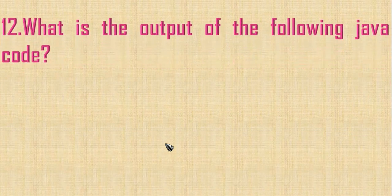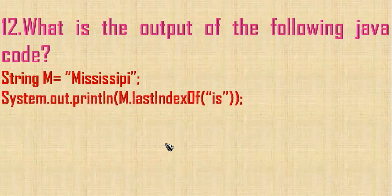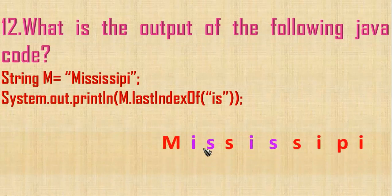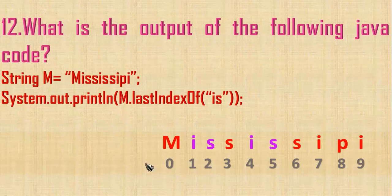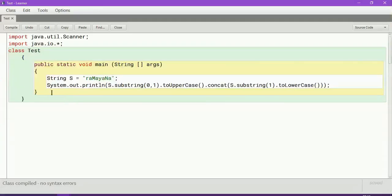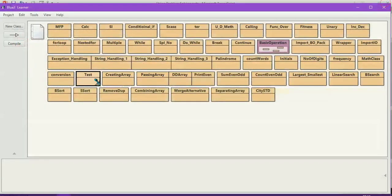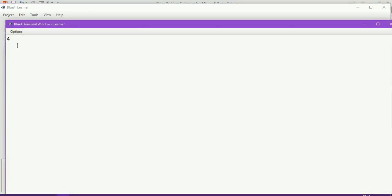Let us go to the next question. What is the output of the following Java code? String m is equal to 'Mississippi'. The printing statement is m dot lastIndexOf('is'). We are having index starting from 0 to 9. The combination of 'i' and 's' is available in two places. It is asked to find the last index of, so the second occurrence starts at index 4. So 4 will be the answer — only the first letter's index is given. After compiling, 4 is the right answer.